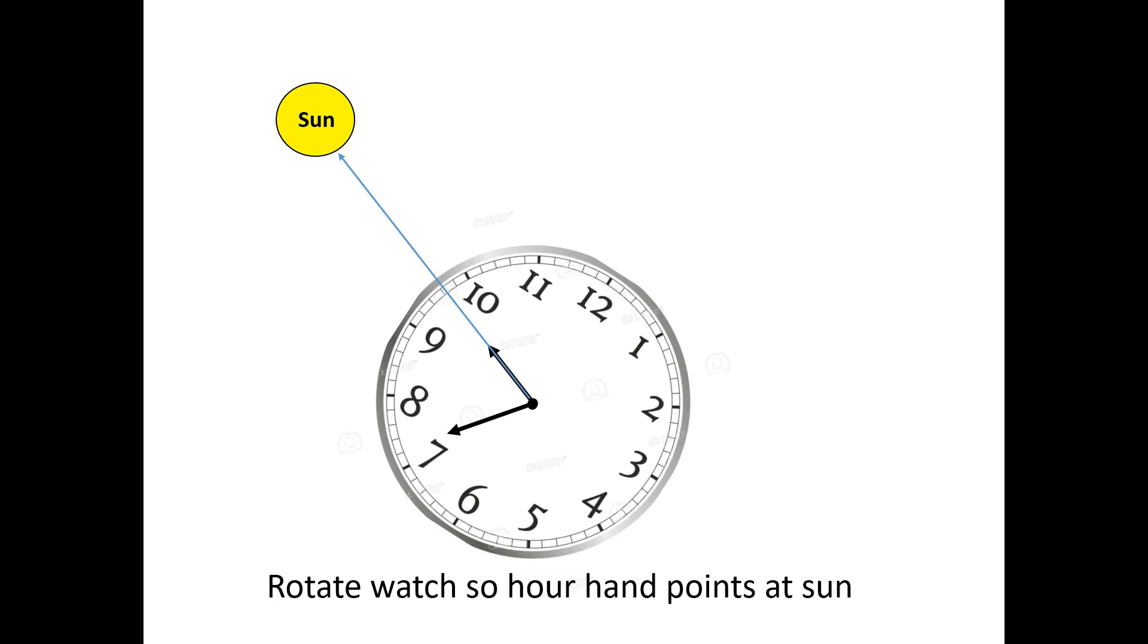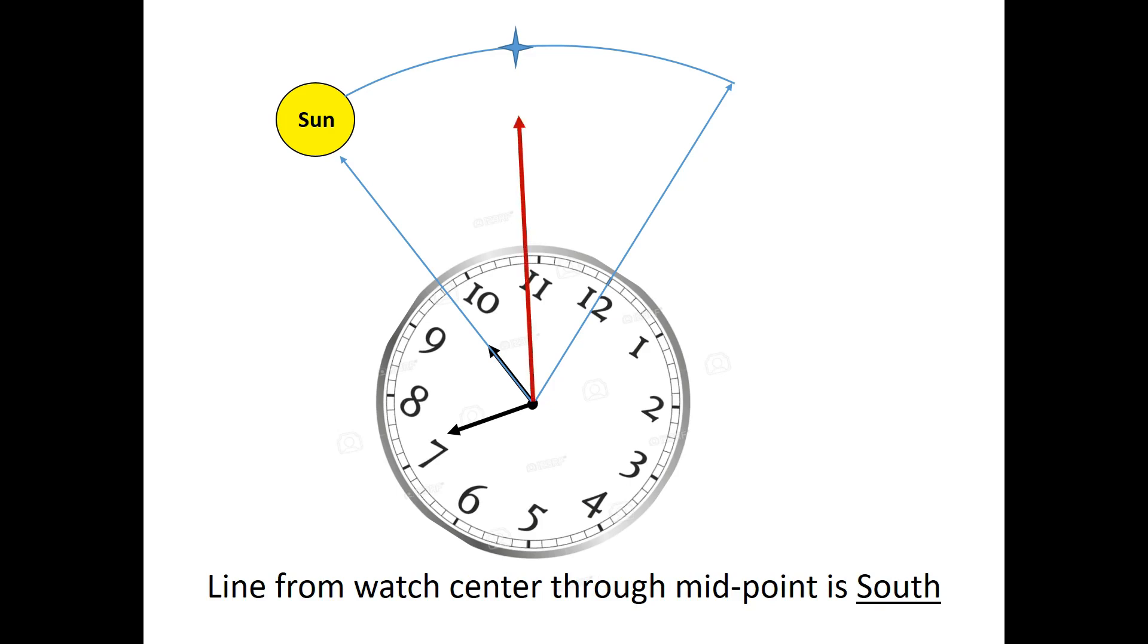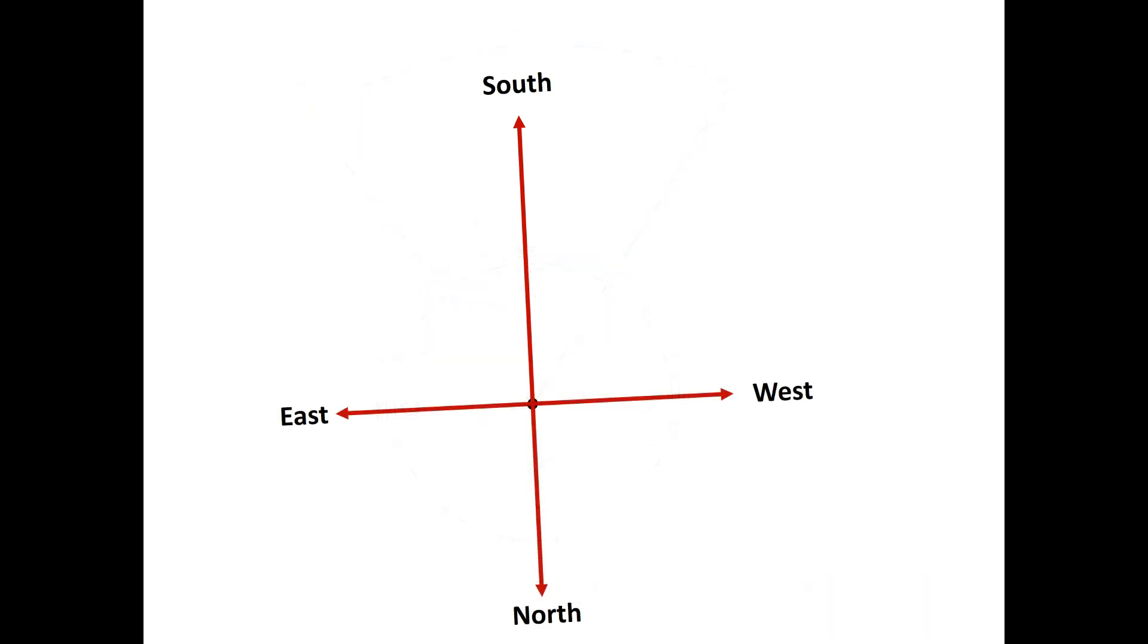The first step is to hold the watch horizontal and rotate it so the hour hand points toward the sun. Now, without turning the watch, imagine a line running from the center of the watch face through the 12 o'clock position. Estimate the midpoint now between the 12 and the hour hand, and then imagine a line running from the watch center through the angle midpoint. That line indicates approximate south. The opposite direction is north, and the line running perpendicular points east and west.